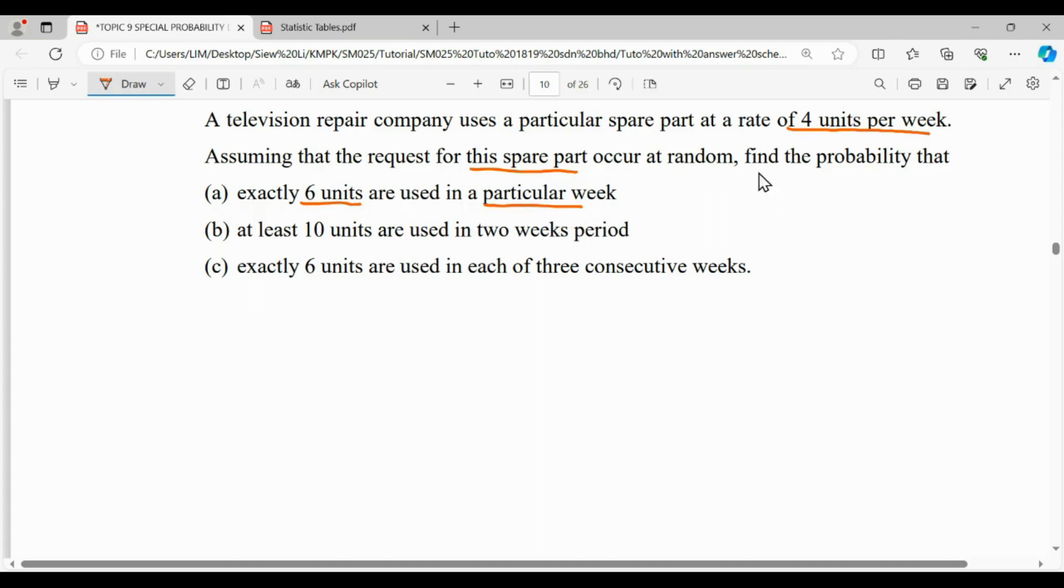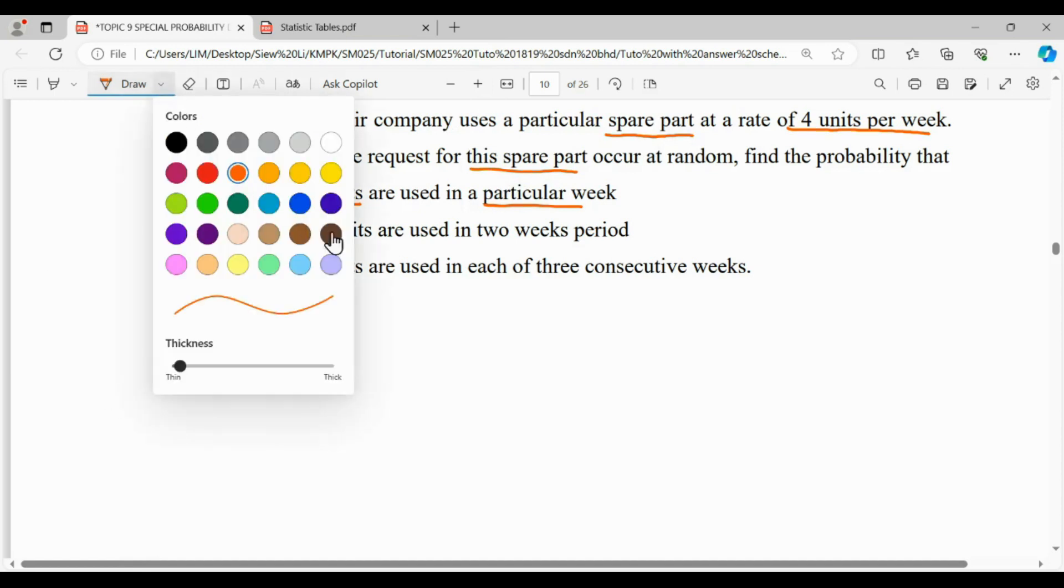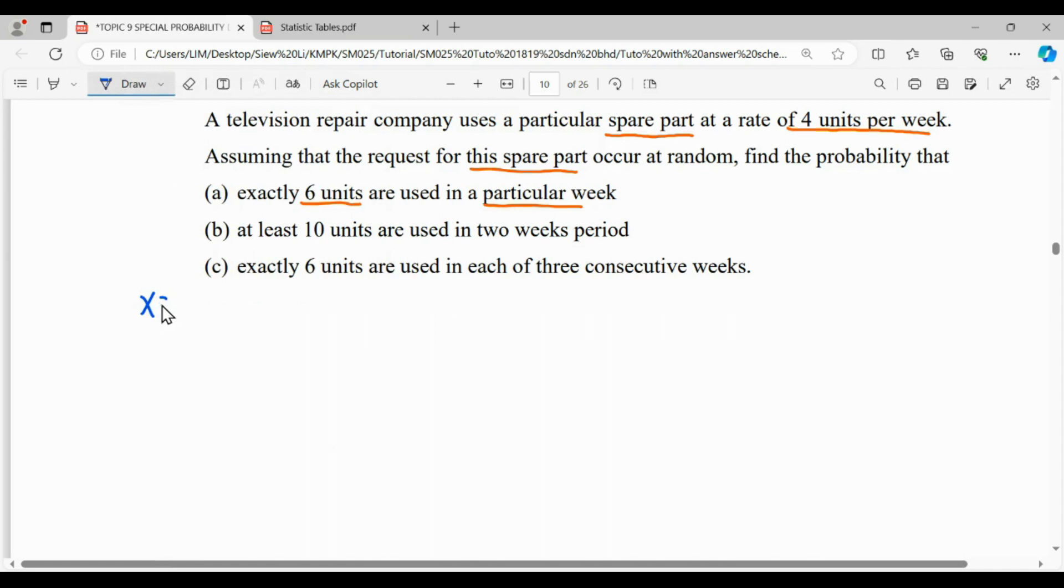So we can see here we're talking about the number of spare parts in a week. From here, we have to write out our distribution. First of all, our random variable X here will be a discrete random variable representing the number of particular spare parts used. And given here, it gives us a rate, which means this is our Poisson distribution: Poisson with lambda 4 for a week.